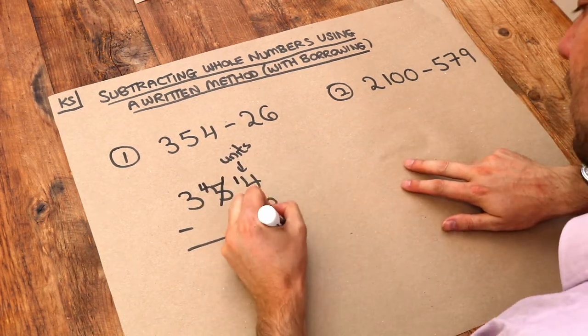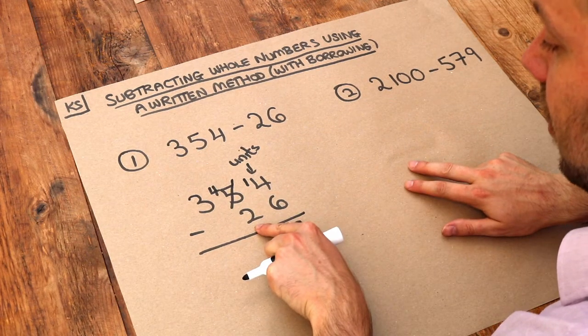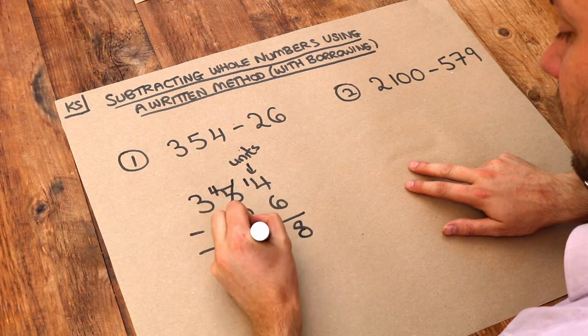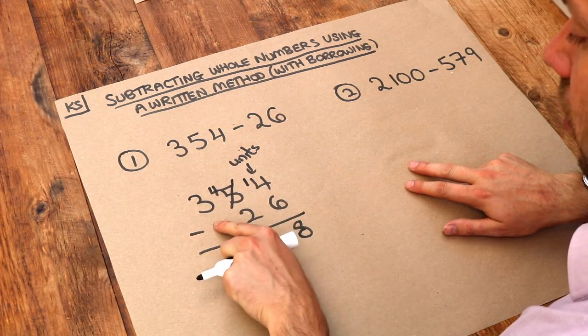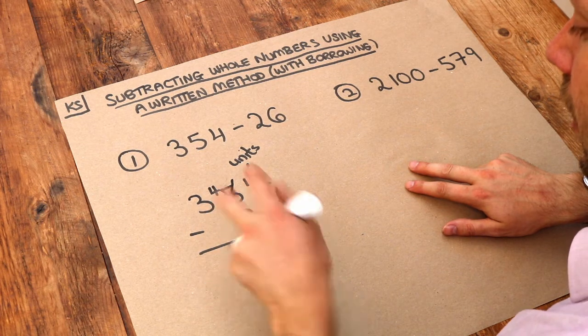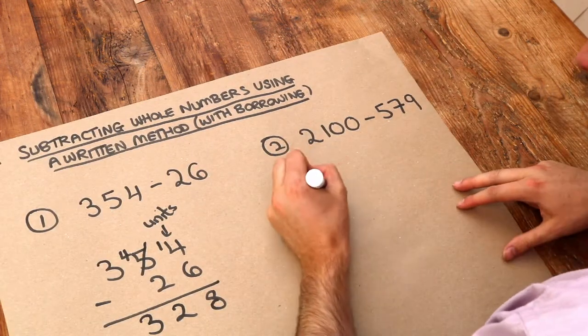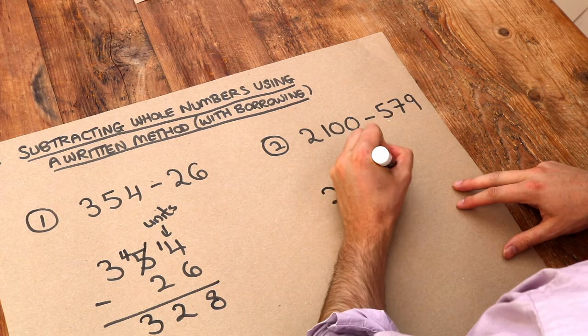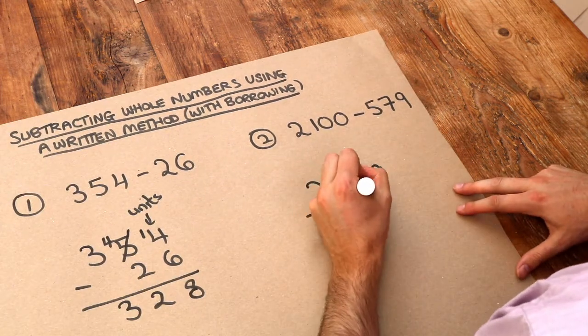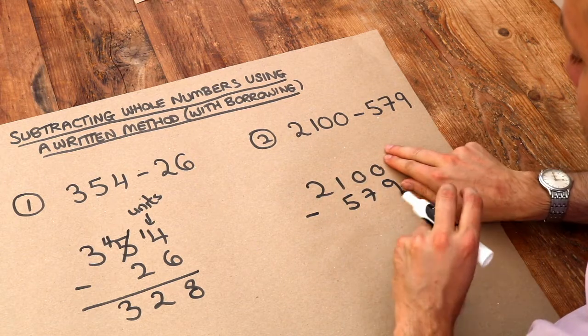14 minus 6 is 8. Now look to the column to the left, we've got 4 minus 2, yes we can do that, so that is 2. Then look to the column to the left in the hundreds column, 3 minus nothing is just still 3. What about this second example? So again I do column subtraction, and we've got minus 579, making sure that the units digits are lined up on the right.